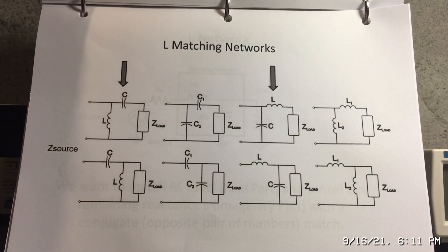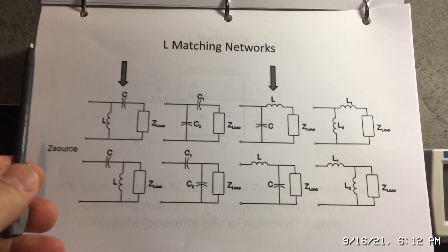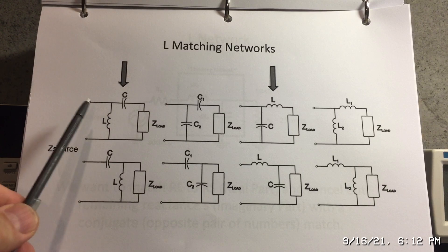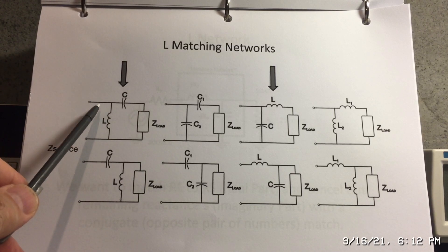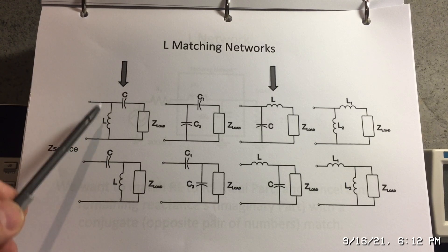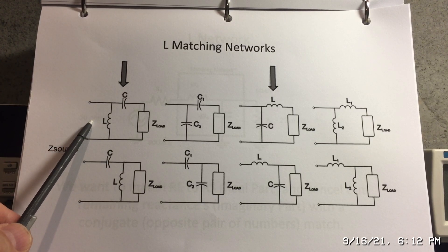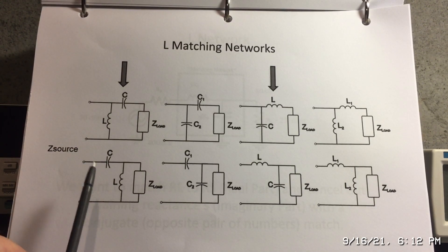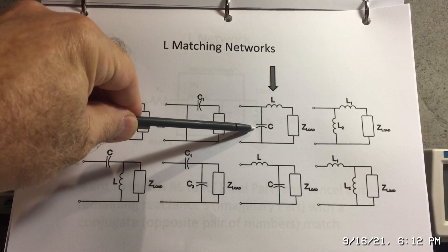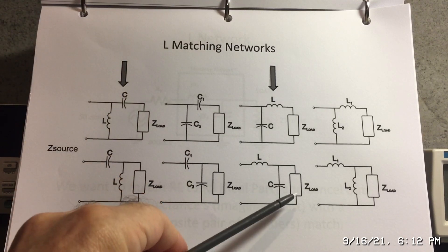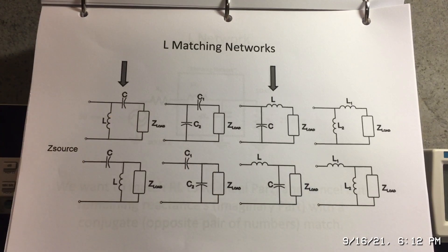This is what an L matching network looks like, and there are a lot of variations. I've got two highlighted here. This particular one uses a series capacitance and a parallel — or shunt — inductor. This is a very common type, and you can see the capacitor could be either on the source side or the load side. Another common type is when we have a series inductor and a shunt capacitor, and the same thing — the shunt capacitor can either be on the source side or on the load side. There are other variations as well, using combinations of different capacitor and inductor values.